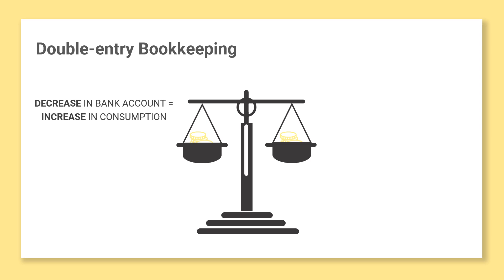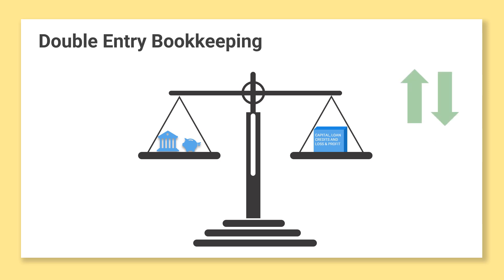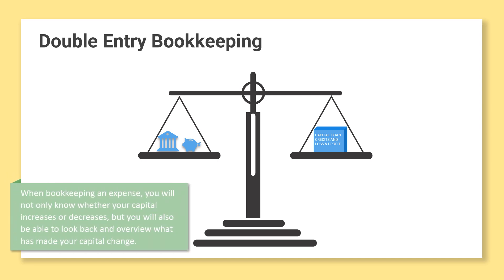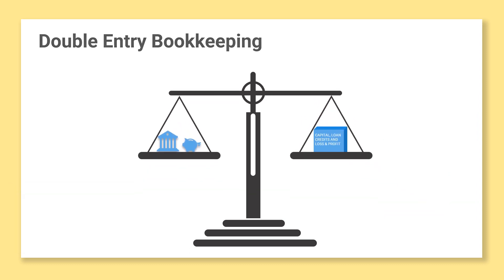This part of your account is called the balance sheet. It is important to keep track of not only how much money you have, but also how you got them or how you spent them. Your accounts will therefore consist of two parts, the balance and the profit and loss statement. The balance is an equation between the money you hold and how they're financed, whereas the profit and loss statement is the explanation of how your capital is increasing or decreasing. The profit and loss statement is divided into accounts that describe the nature of the income or costs. When bookkeeping an expense, you will not only know whether your capital increases or decreases, but you will also be able to look back and overview what has made your capital change. When, for example, you get 10 euros on your bank account, you will make sure to bookkeep this in the profit and loss statement.